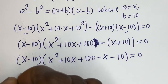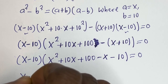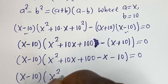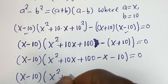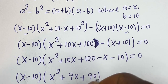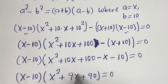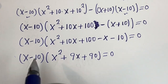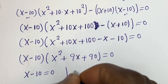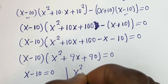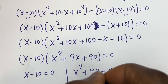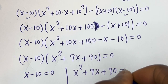Now this is (s minus 10)(s squared plus 10s plus 100 minus s minus 10) is equal to 0, which simplifies to (s minus 10)(s squared plus 9s + 90) is equal to 0. There are two cases: the first case is s minus 10 equals 0, and the second case is s squared plus 9s plus 90 equals 0.